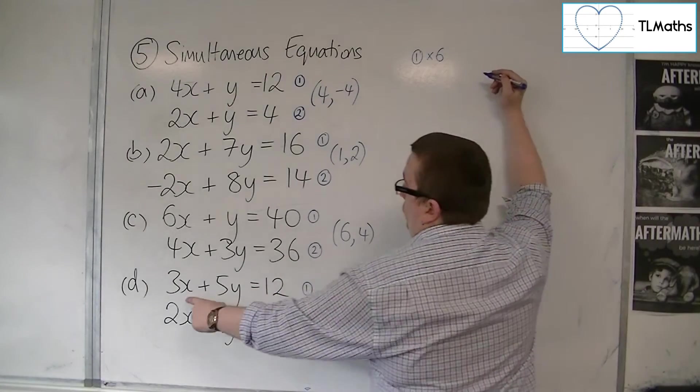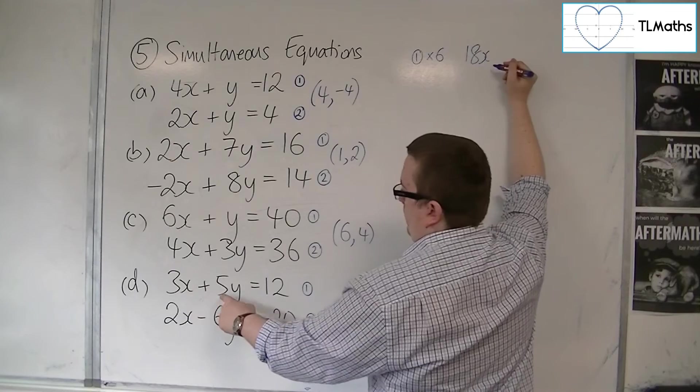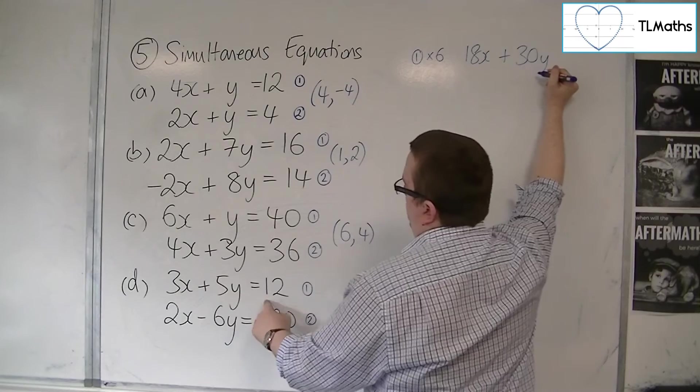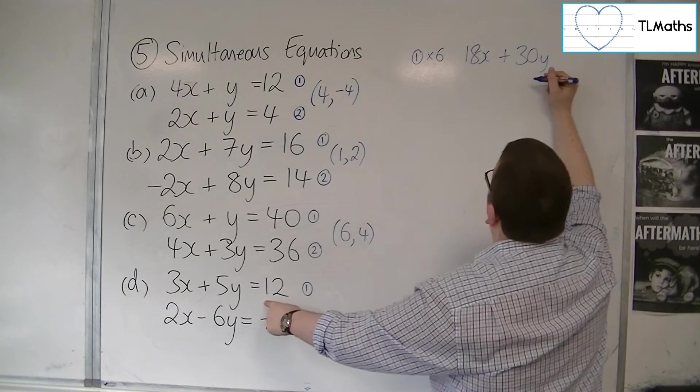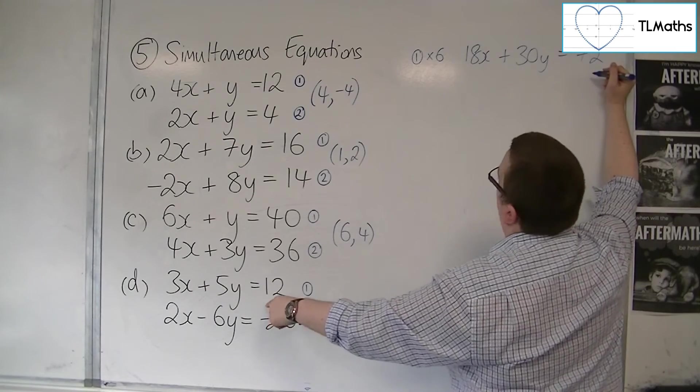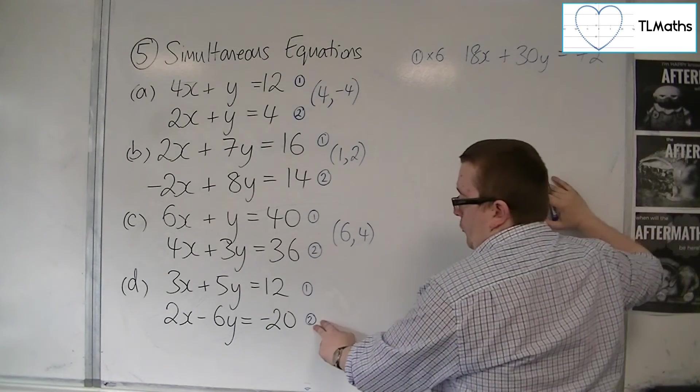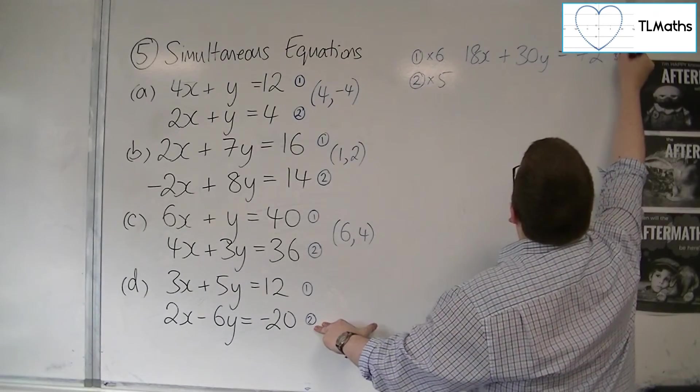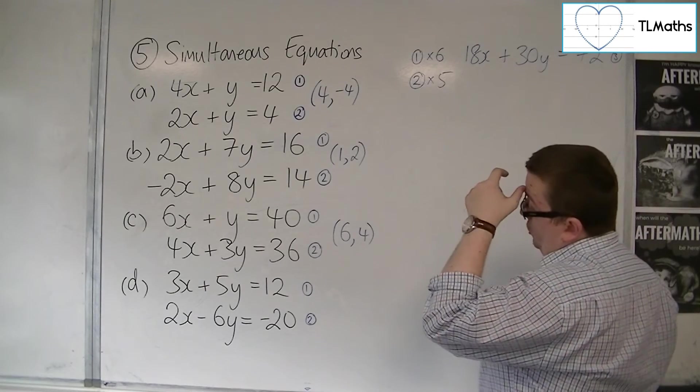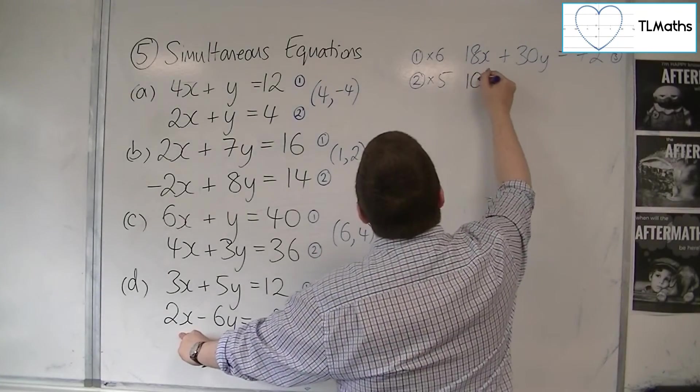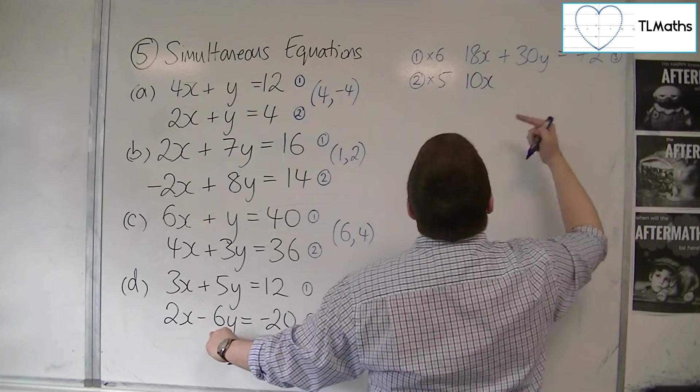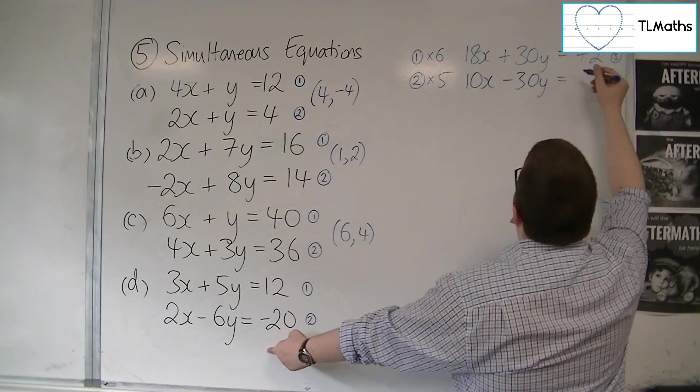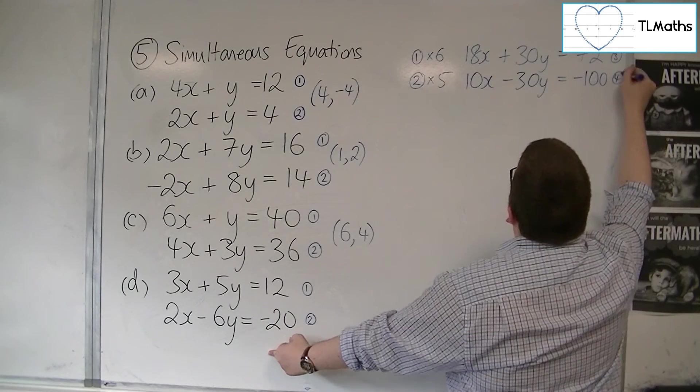So 1 times 6. 3x times 6 is 18x. Plus, well, 5y times 6 is 30y. And then I've got 12 times 6 is 72. Now that's not all I need to do. I need to multiply equation 2 by 5. I'm going to call that equation 3. So 2 by 5. 2x times 5 is 10x. Minus 6y times 5 is minus 30y. Minus 20 times 5 is minus 100. And that's going to be equation 4.